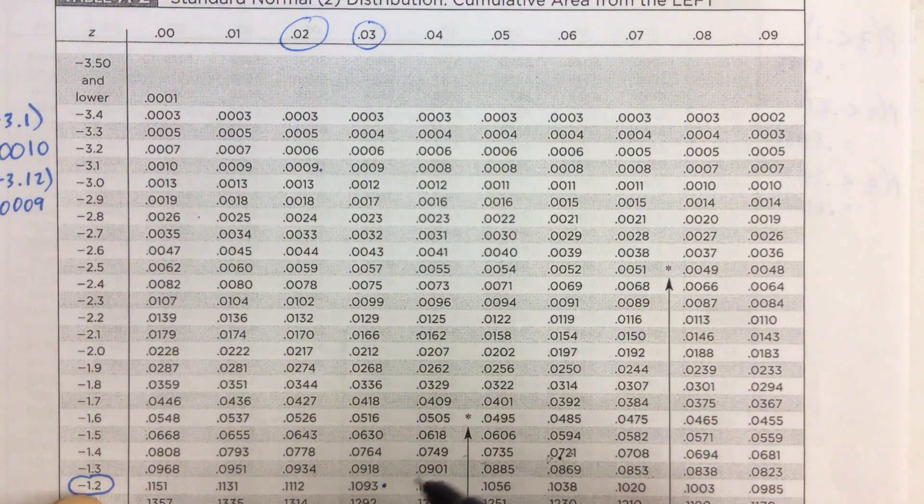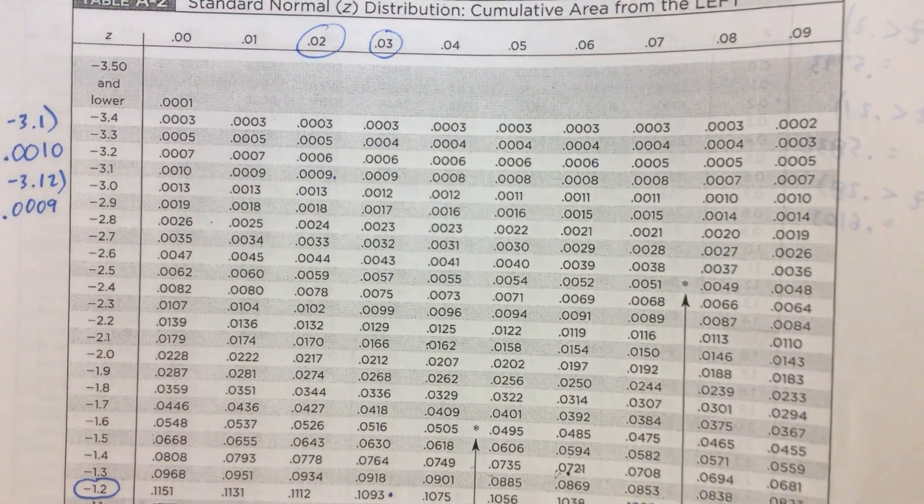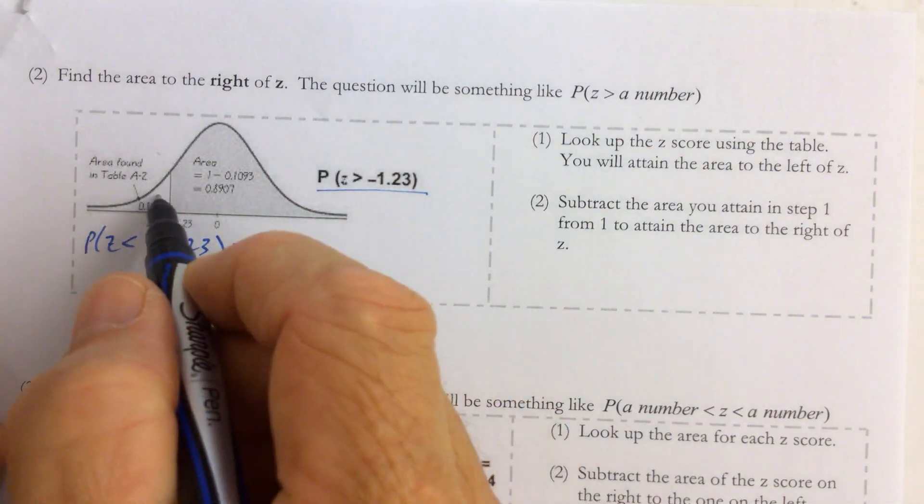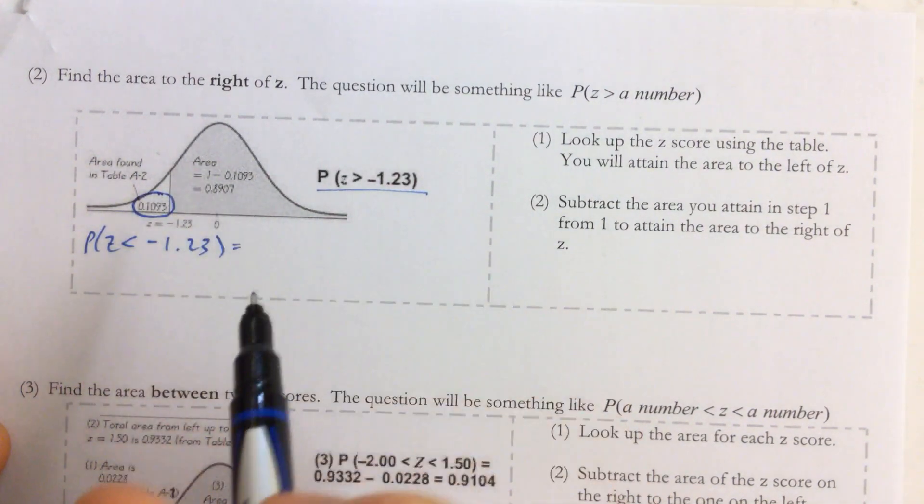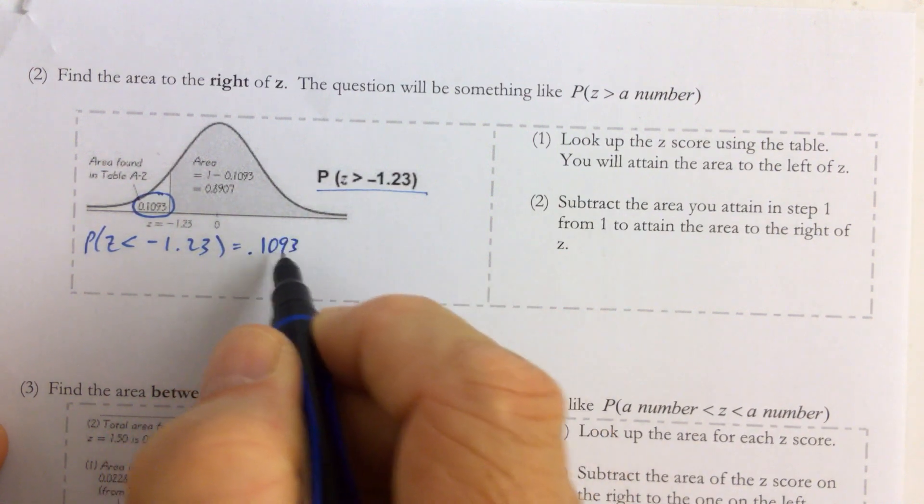0.1093 is the area to the left of the z-score of negative 1.23. So that's 0.1093. We found that from the table.